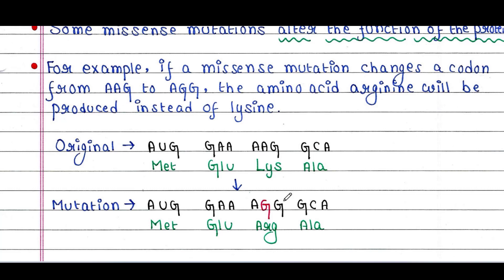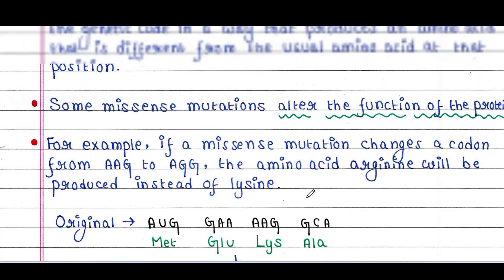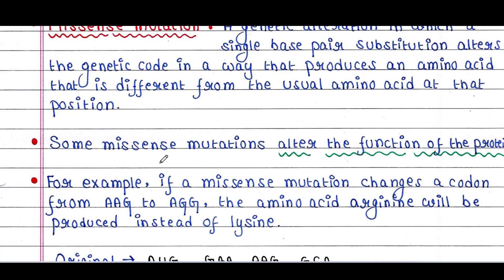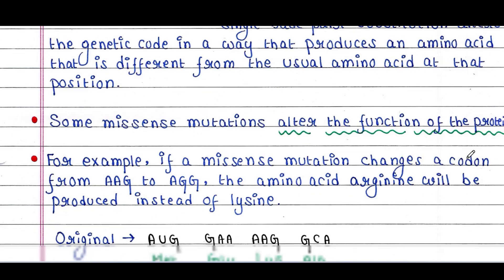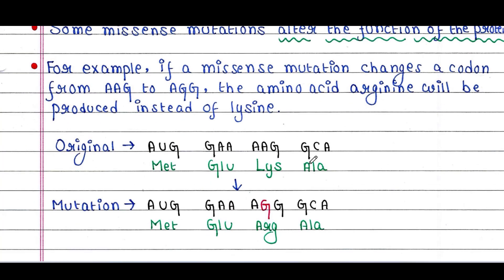The AAG codon, which codes for lysine, is now coding for arginine since it becomes AGG. Some missense mutations alter the function of the protein. For example, if a missense mutation changes a codon from AAG to AGG, the amino acid arginine will be produced instead of lysine.